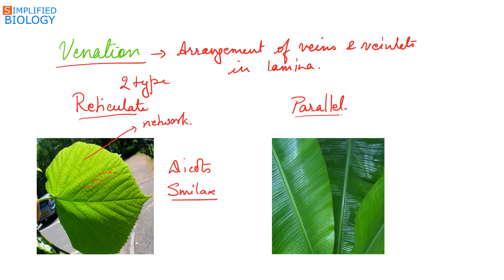In parallel venation, the veins are parallelly arranged and do not form a reticulum or network. This is seen in most monocots, and in dicots like Calophyllum.